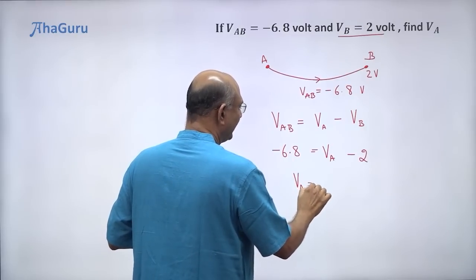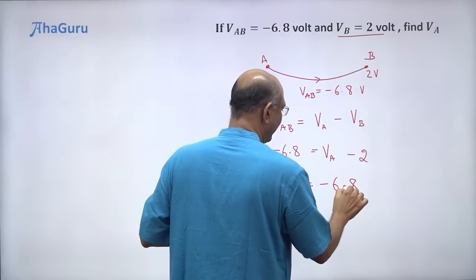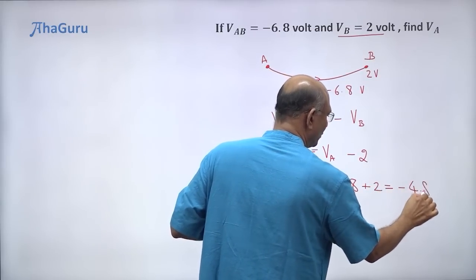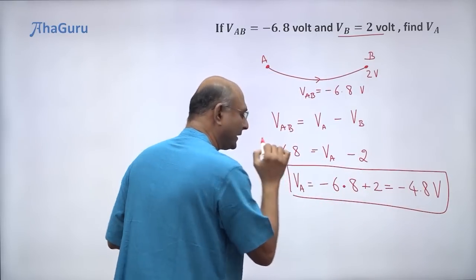So we can write VA is minus 6.8 plus 2. Minus 6.8 plus 2 is minus 4.8 volts. So VA is minus 4.8 volts.